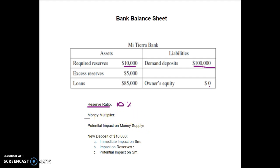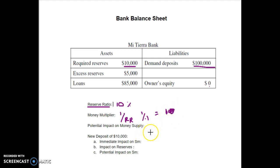Next, find the money multiplier. The money multiplier indicates the multiplied loan effect — when I give out a loan, it becomes somebody else's income, they deposit it as a checkable deposit, it gets lent out again, over and over. Find it by doing one over the reserve ratio: 1 divided by 0.1 equals 10. Every new dollar sent out in a loan has a multiplied impact of 10.